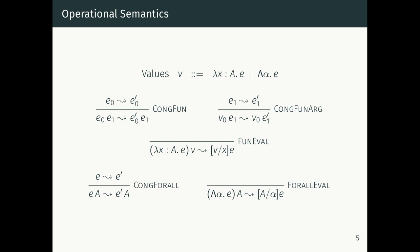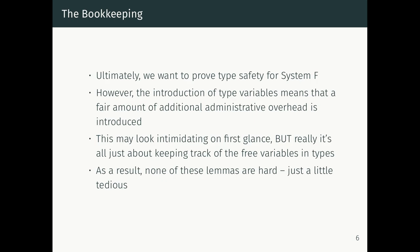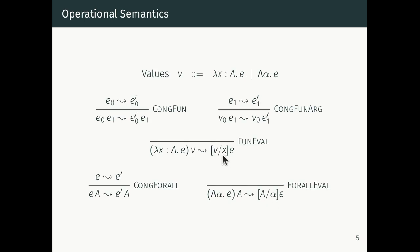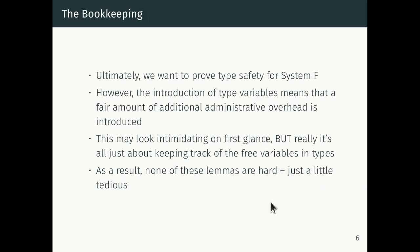We have two systems of reductions that look almost the same. To prove type safety for this calculus we need to prove the substitution theorem twice: once substituting term values for term variables, and once substituting types for type variables. This introduces additional overhead. In the last lecture we saw we had to prove a whole bunch of administrative lemmas — but even though it looks like a lot of work, it's really just about keeping track of two sorts of free variables.